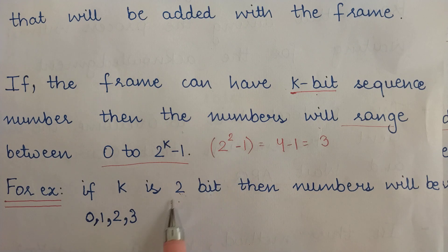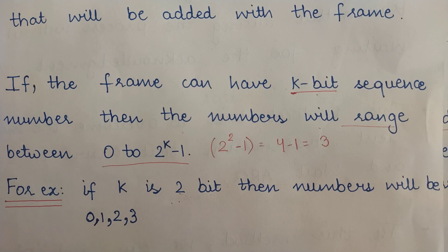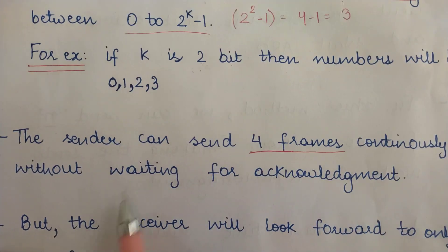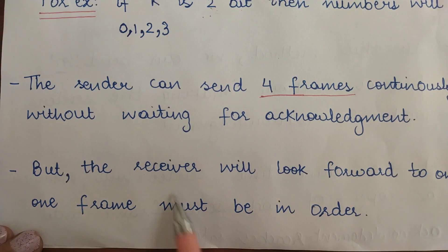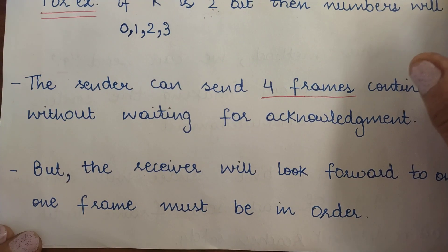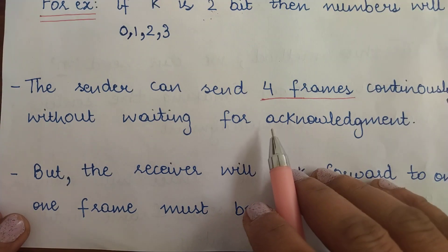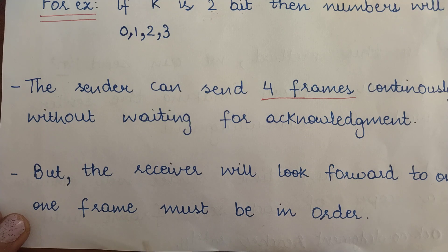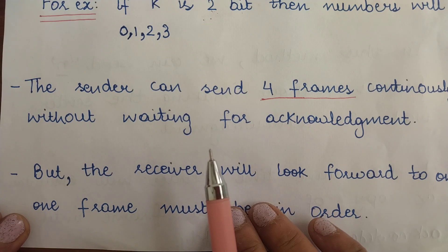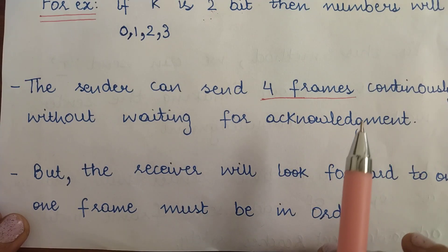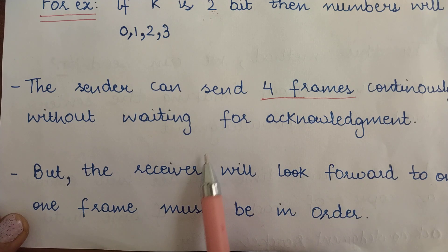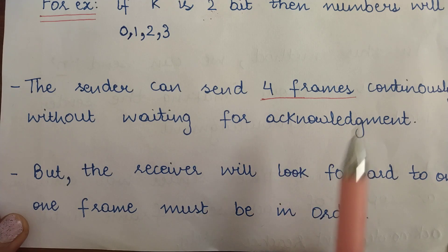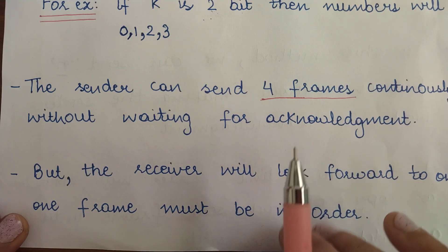So the sender can send four frames continuously without waiting for the acknowledgement. However, the receiver will look forward to only one frame at a time, and that frame must arrive in order. Even though you are sending four frames together, the receiver cannot process all four frames simultaneously. At any point of time, the receiver will look forward to only one frame in order — meaning sequence number 1 first, then sequence number 2, then 3, and so on. This is called in-order delivery of frames.